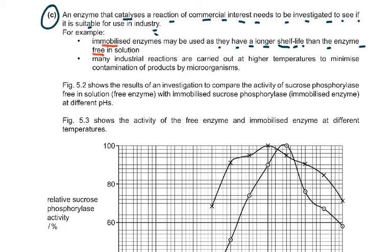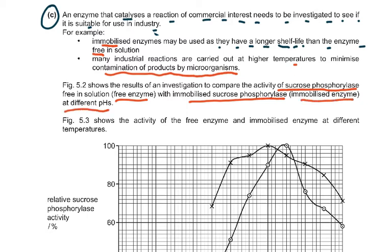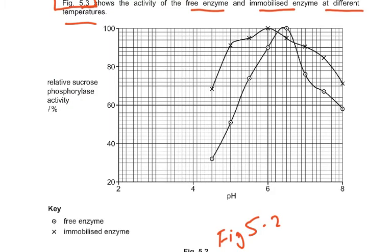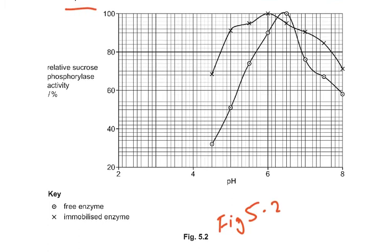Many industrial reactions are carried out at higher temperatures to minimize contamination of products by microorganisms. Figure 5.2 shows the results of an investigation comparing the activity of sucrose phosphorylase free in solution versus immobilized enzyme at different pH values. Figure 5.3 shows the activity of both enzyme forms at different temperatures. Let's study these two graphs carefully. In figure 5.2, the free enzyme and immobilized enzyme curves are plotted against pH.